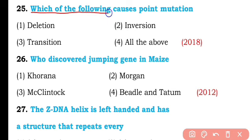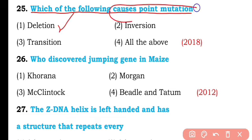Question number twenty-five. Which of the following causes point mutation? Deletion, inversion, transition, or all of the above? So the correct answer is option one — deletion can cause point mutation.